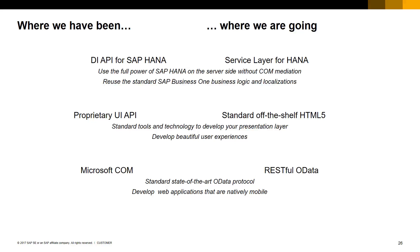The next slides show where SAP Business One has been with respect to integration and extensibility and where we are going. Using SAP Business One for SAP HANA, we still have the SAP Business One SDK components such as the Data Interface and User Interface APIs — these can still be used with a traditional add-on. But with SAP HANA, we now have the Service Layer for data integration, which allows us to move from the SDK COM APIs to full server-side business logic using industry standards such as HTTP and OData. For the user interface, where we have also used the UI API from the SDK — which is proprietary to SAP Business One — we can now use standard HTML5 for the presentation layer. So we are moving away from COM-based APIs to OData and web services that are natively built for mobile-first.